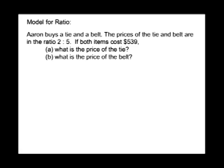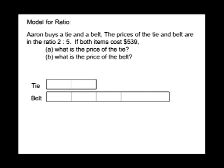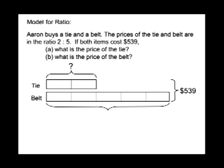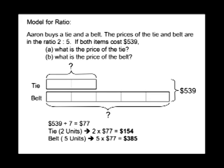In this example, we're going to model ratios. Aaron buys a tie and a belt. The prices of the tie and belt are in a ratio of two to five. If both items cost $539, what is the price of the tie and the belt? The tie represents two parts and the belt represents five parts, for a total of seven parts. 539 divided by seven equals 77. Two units for the tie: 2 times 77 equals $154. Five units for the belt: 5 times 77 equals $385.